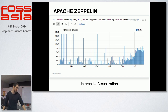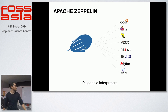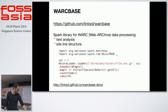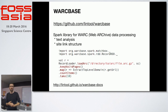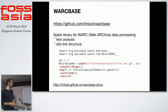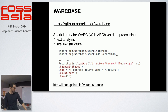Zeppelin has pluggable interpreters so you can use not just Spark but many other things. You can build stuff with simple queries over distributed datasets. The next tool is WARCbase, a library built by a professor at the University of Waterloo in Canada. It helps you work with crawl and archive data and gives a really nice API — for example, counting top-level domains in the crawled pages that have 400-status returns, without needing to do low-level filtering yourself.